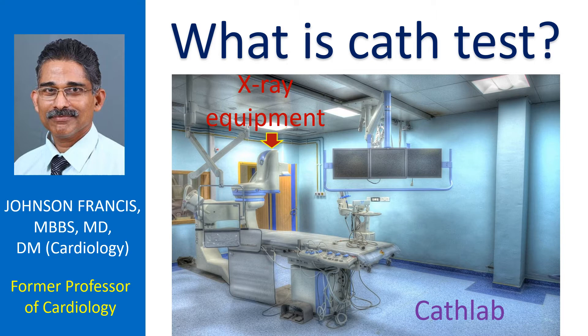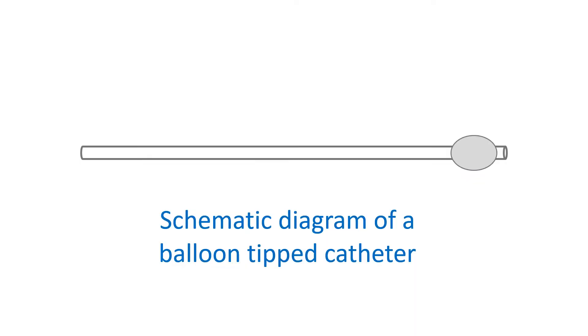The catheters are guided through the blood vessels into the heart using live x-ray imaging, called image intensifier fluoroscopy. Sometimes echocardiography may also be used to guide the catheter within the heart.